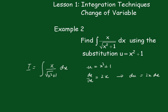You'll notice we haven't got a 2x dx here, we've got x dx, so what I'll do I'll divide both sides by 2, I get 1/2 du equals x dx, and so now I can replace this bit here with 1/2 du.